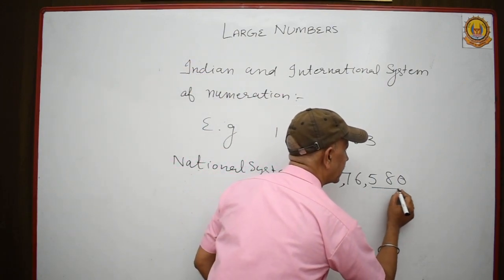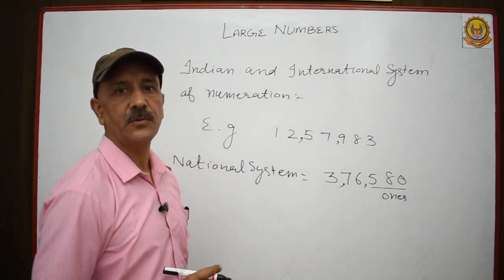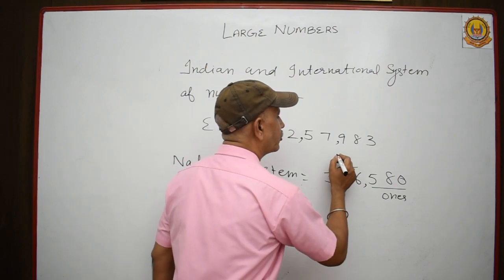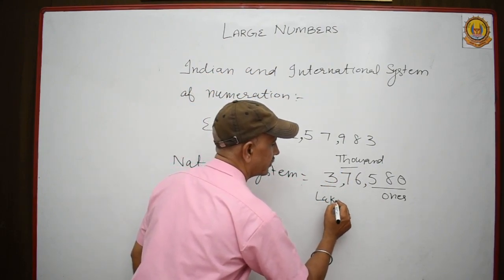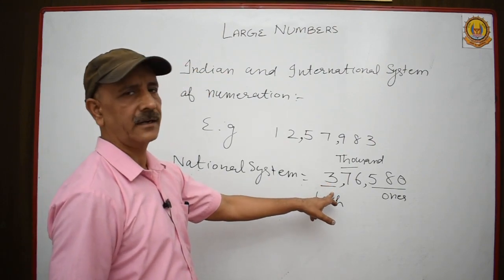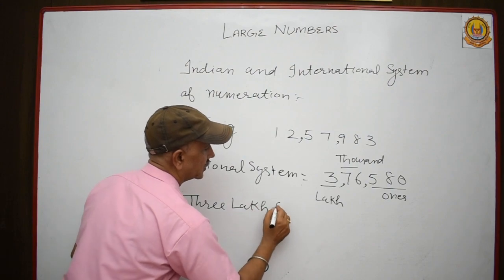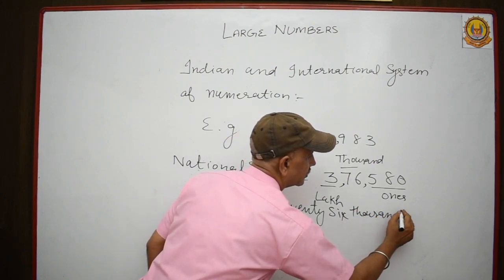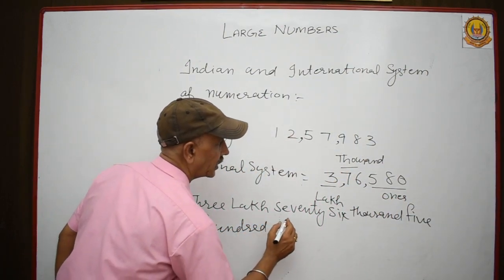In this system, these are periods. This is the 'ones' period, this is the 'thousands' period, and this is the 'lakhs' period. In words, we can write this number as three lakh seventy-six thousand five hundred eighty.